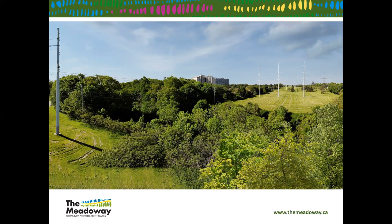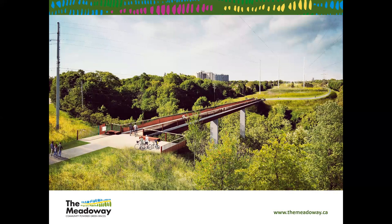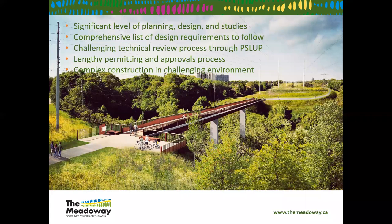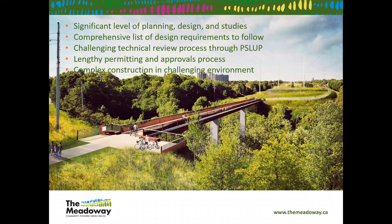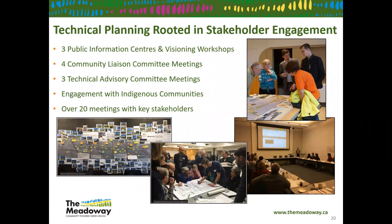Zooming in on a future section of the Meadoway at the Ellesmere Ravines in Scarborough — this portion will involve a multi-use trail, restored meadow, and a pedestrian bridge. This is a complex space for construction: there's a significant level of planning, design, and studies required. For a bridge, for instance, you need geotechnical work and flood modeling to ensure whatever you're building in a ravine doesn't increase the floodplain. Working with landowners like Hydro One and Infrastructure Ontario also involves a lengthy review process.